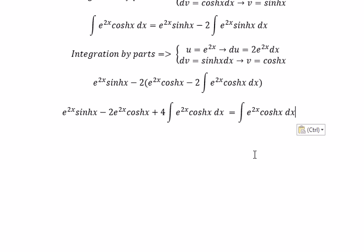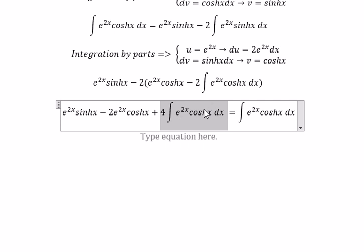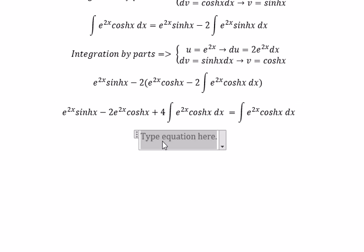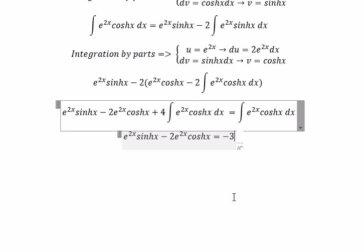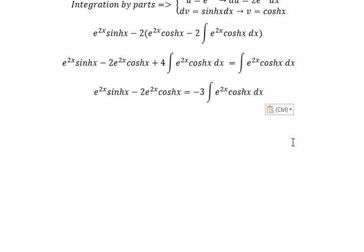So we put this one go to the right. And you got negative 3 multiply with this integral. So we just divide both sides with negative 3. And now we can get the final answer.